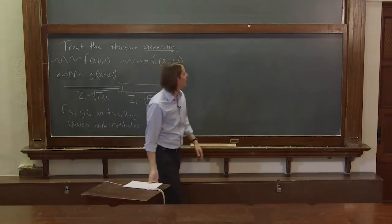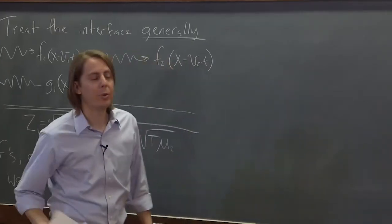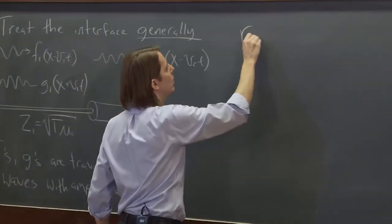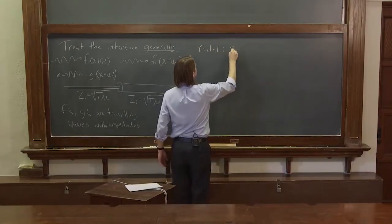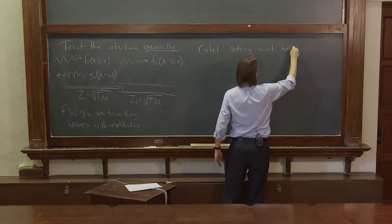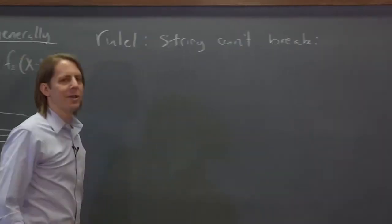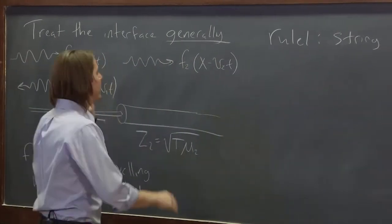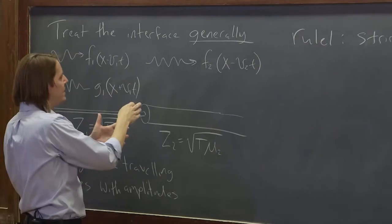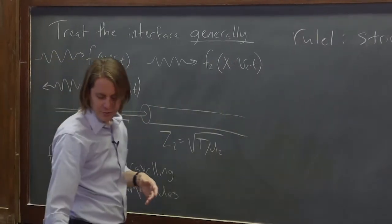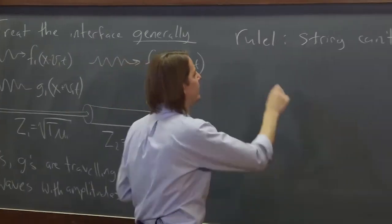So let's look at our two rules here. What would have to happen? Rule one is that the string can't break. So the string has to be continuous at that interface. That means whatever is going on with f and g has to equal, f1 and g1 has to equal f2. So you can really write it this simple: f1 for all time plus g1 for all time has to equal f2 for all time.